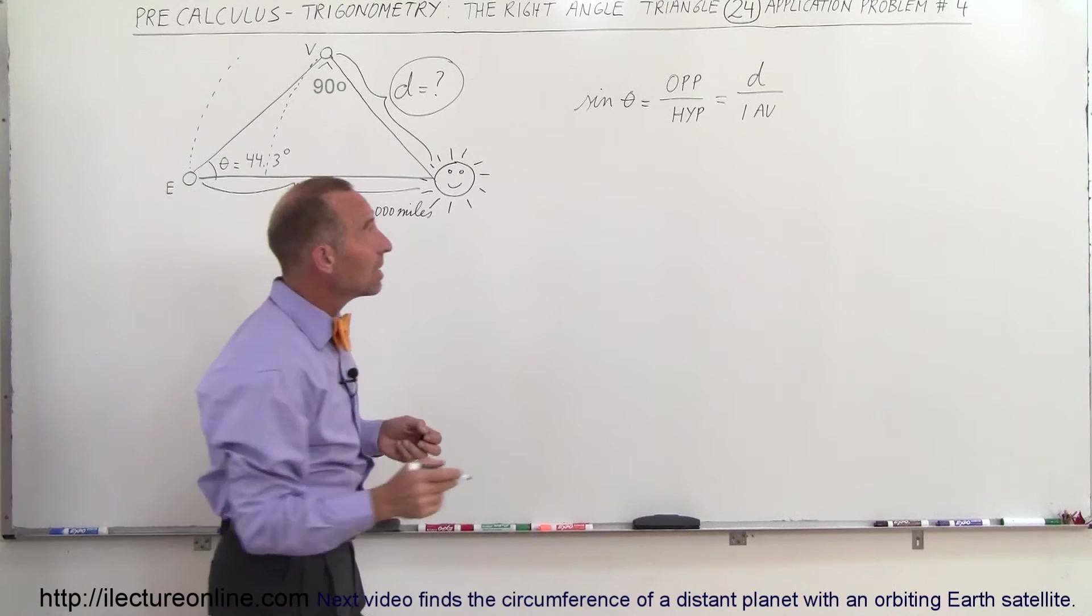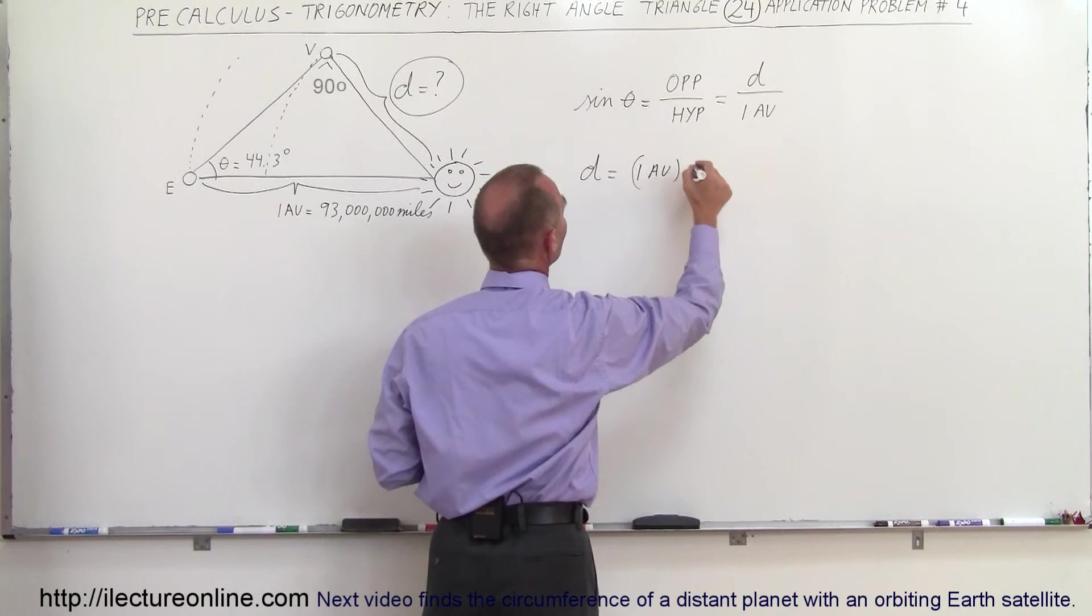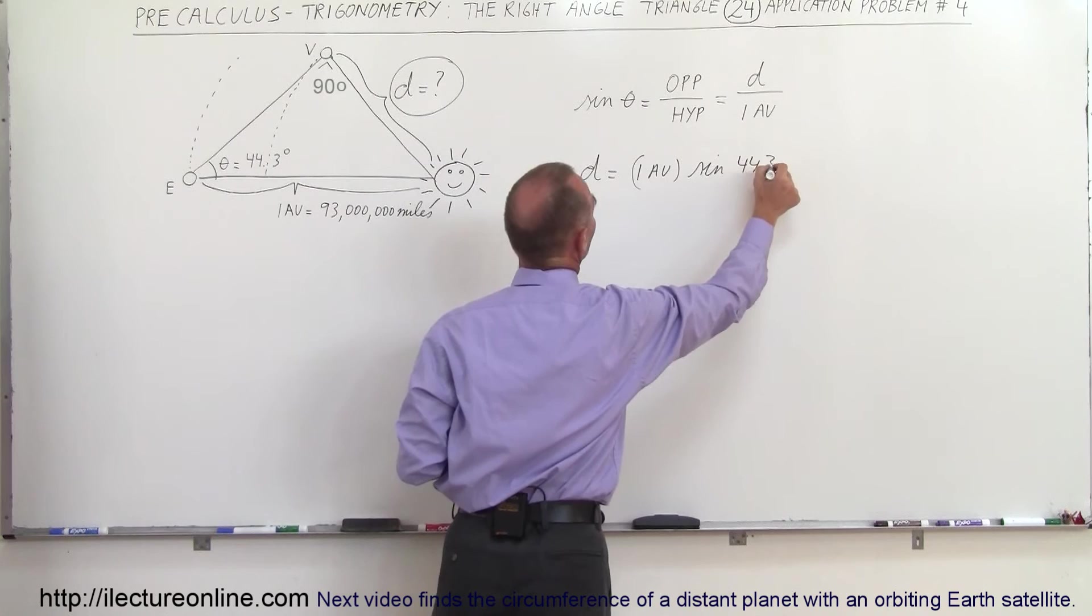We want to find out d so we can write then that d, the distance, is equal to one astronomical unit times the sine of theta. In this case theta is 44.3 degrees, like so.